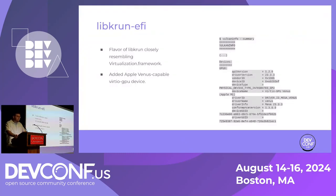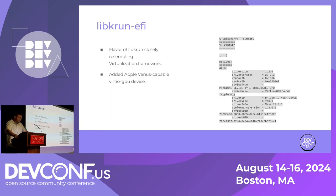We have the libkrun EFI flavor. Libkrun has a number of flavors depending on where you run it. The EFI flavor closely resembles virtualization framework and currently only runs on macOS, though we want to have it work on Linux at some point. The biggest feature we added is the Apple Venus-capable VirtIO GPU device. So you can run something in a libkrun guest like Vulkan info summary and get information about your Apple GPU.